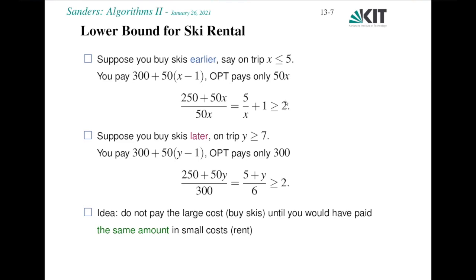Now suppose you buy skis later, say on trip y where y ≥ 7. Then you pay 300 + 50(y−1), whereas OPT buys immediately and pays 300. The competitive ratio is (250 + 50y) / 300 = (5 + y) / 6. Since y ≥ 7, this is at least 2, which is once more a worse competitive ratio than our algorithm that buys at the sixth trip. So we have proven that buying on the sixth trip is the optimal algorithm.